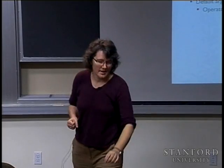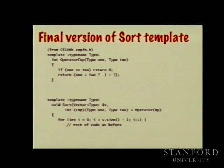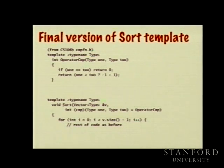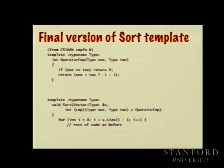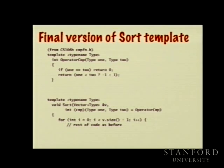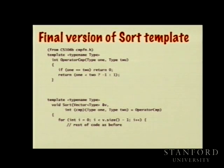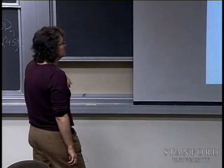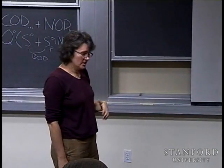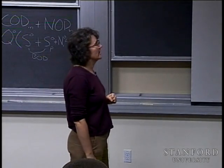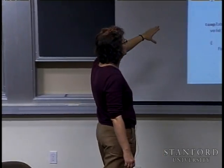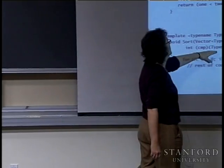We'll use an 'operator compare' function. There's another header file in the 106B collection called cmpfunction.h. It's a template function called operator compare that takes two type arguments and uses equals-equals and less-than to return zero, negative one, or one. Operator compare only works when instantiated for types where the built-in equals-equals and less-than are defined — that includes primitive types like int and double, and also string. It will not work on structs, vectors, or other types that don't have those operators defined.